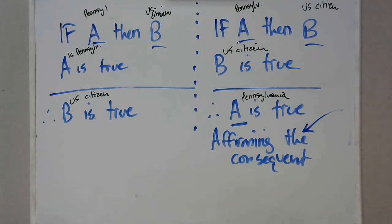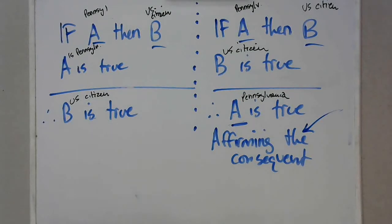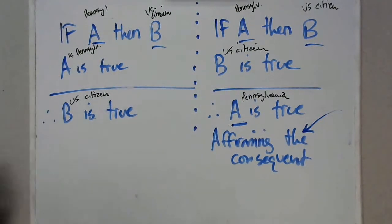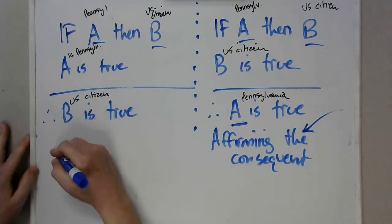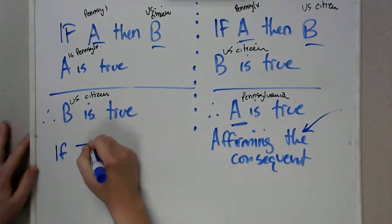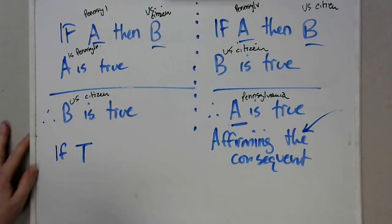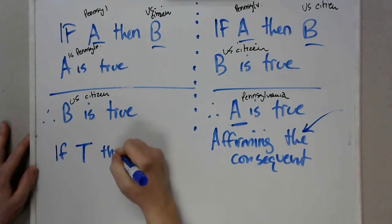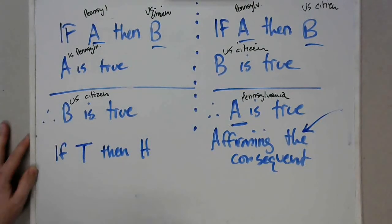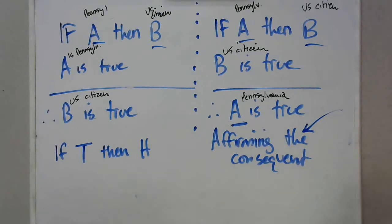What does any of this have to do with scientific hypothesis testing and theory building and the notion of scientific proof? Let's boil down the logic behind theory building through hypothesis testing into a simple syllogism. It goes: if T — theory is true — then H — hypothesis will be confirmed.